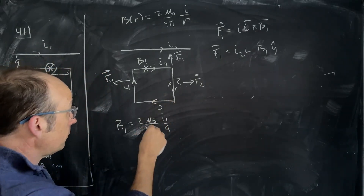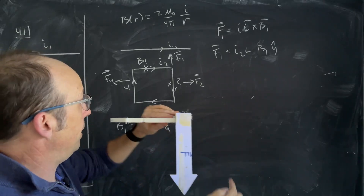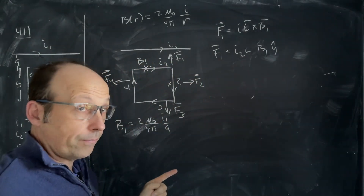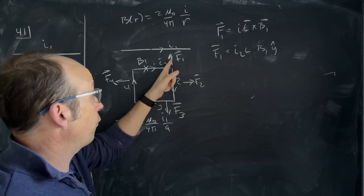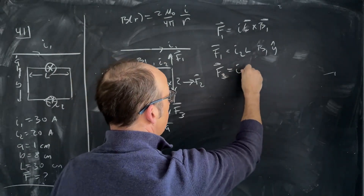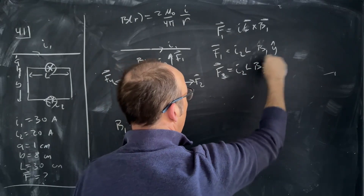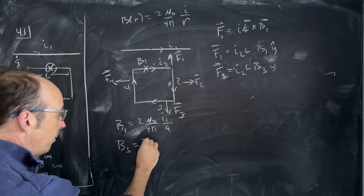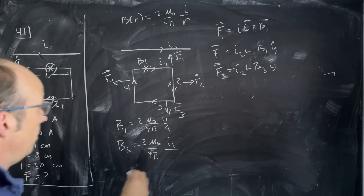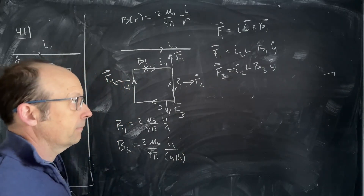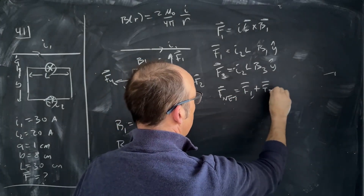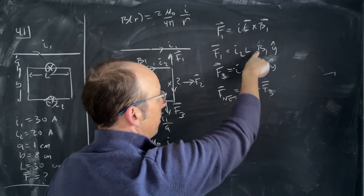Now for the bottom wire: qv is going that way, B is into the board, so F3 points downward — negative y hat. F3 = i2 · L · B3 · (−ŷ), where B3 = 2μ₀/4π times i1/(a+b), since the bottom wire is at distance a+b from the wire. F3 and F1 do not cancel because F3 is further away, giving a lower magnetic field, so the net force is upward.